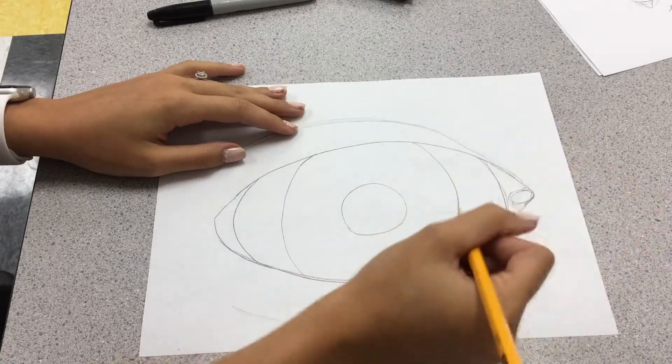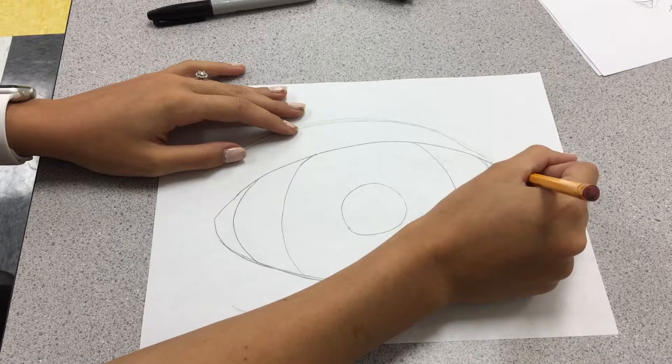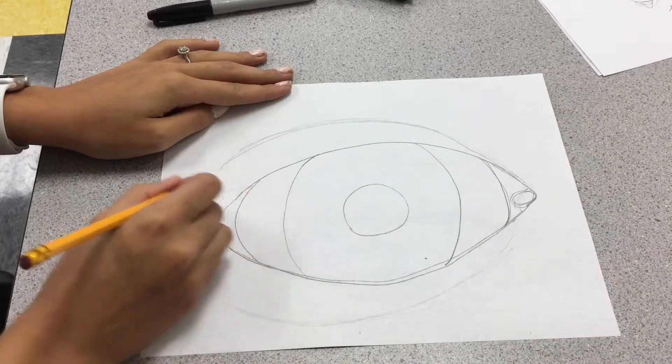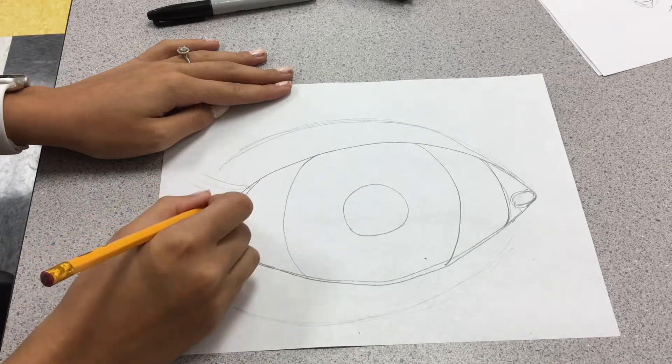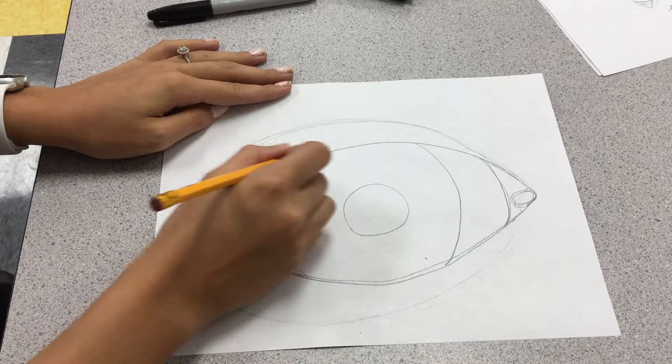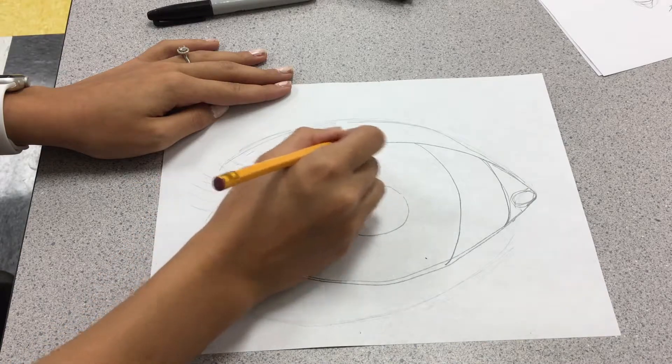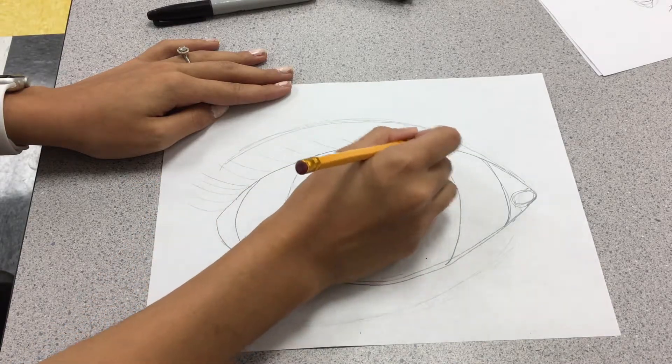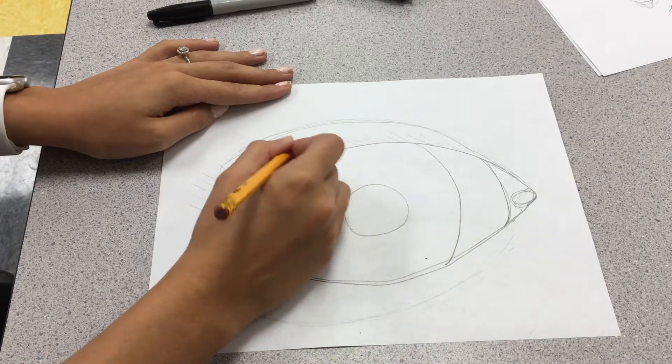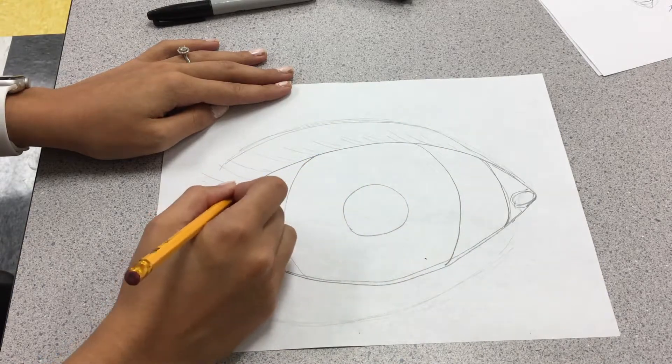Next, we're going to just kind of add some more details. So how I like to make eyelashes is I like to make them kind of little and thin, and you just kind of make swoops. And your eyelashes get shorter as they go up towards here, towards that corner. And you can use as many or as little eyelashes as you want.